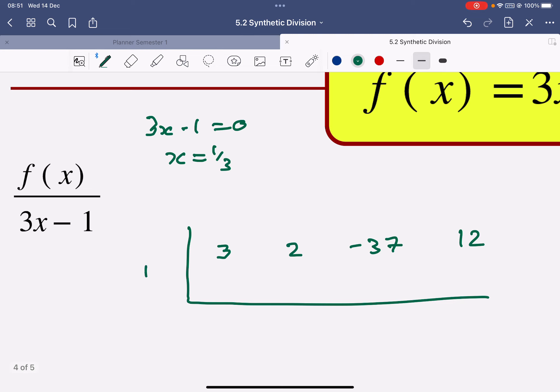So I'm actually doing a third of everything here. So this is just a slight change. But we follow the process. Drop 3 down. Third times 3 is 1. Add them together. Drop 3 down. That's going to give me 1 again. Add them together to give me negative 36. Times that by a third is negative 12. And remainder 0.